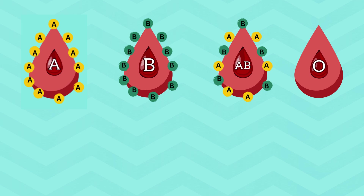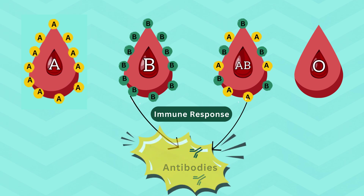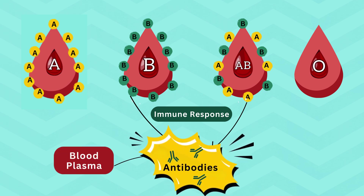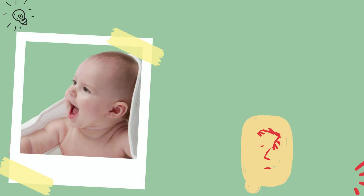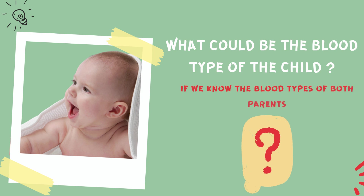Apart from being surface markers, these antigens have another important role. They can trigger an immune response, which occurs due to the interaction of antigens with antibodies. Unlike antigens, antibodies are found outside the red blood cells, in the blood plasma. Now let's see what could be the blood type of the child if we know the blood types of both parents.